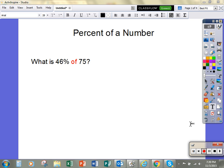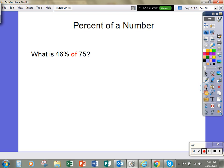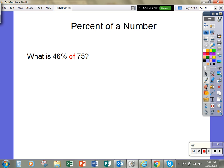Yesterday, we learned how to find percent of a number. We simply looked at the word 'of' and knew that meant to multiply our percent, which we're going to rewrite as a decimal, times the given number, so 0.46 times 75.